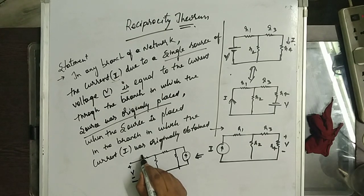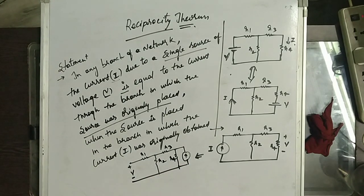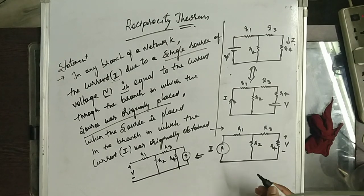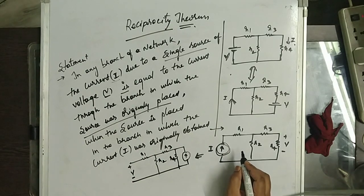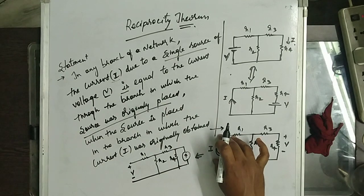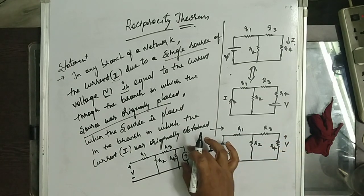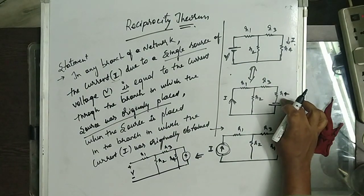And the response here is taken across R1, R2, R3, R2. When the current source is used, I replaced the current source with a targeted element in the branch. Here the voltage source is replaced in series with the targeted element.